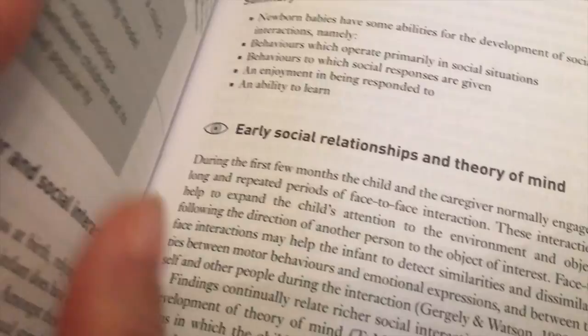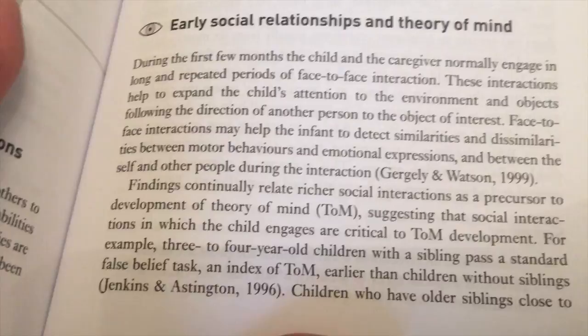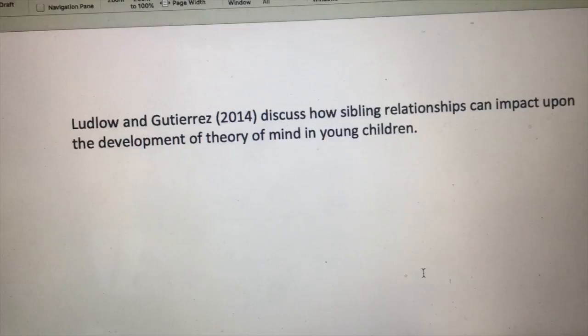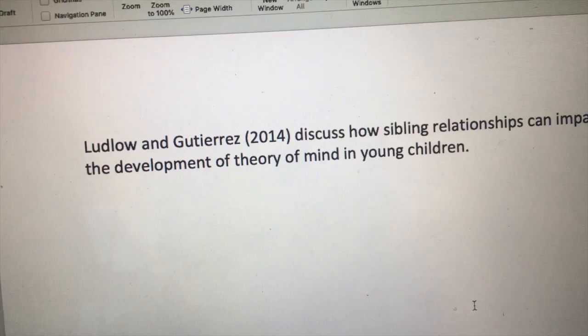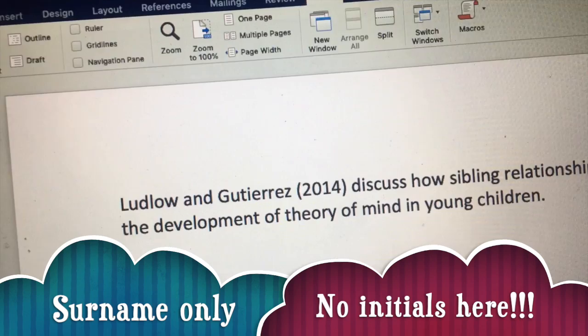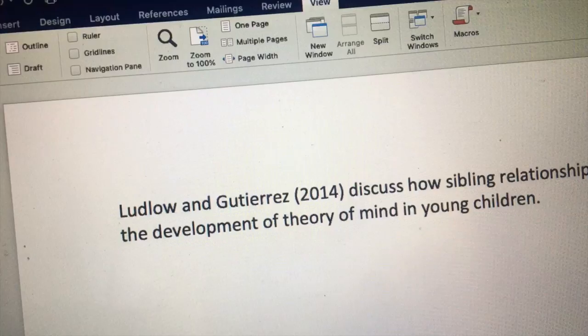I'm going to imagine I've read this paragraph and I'm thinking that's what I need to put in my assignment or essay. One way I could do that is to write a sentence like this. So Ludlow and Gutierrez — you'll see they're the names of the authors right on the front of the book. I'm going to put them at the beginning, and then in brackets — not italicised, not bold, nothing like that, just in brackets — I've got the date of publication.